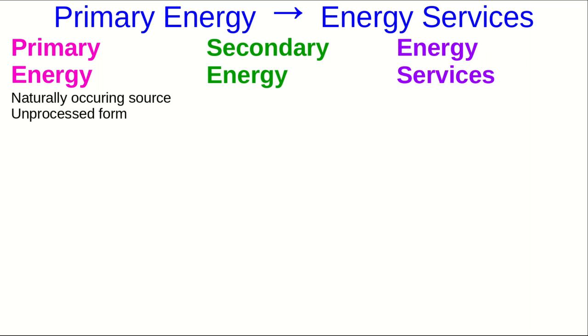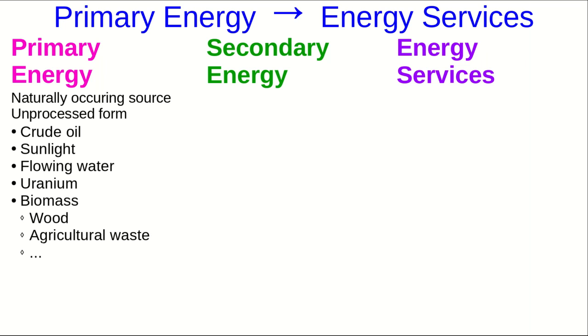Primary energy are the raw, naturally occurring things, usually but not always objects, which contain energy in unprocessed forms as we extract them from the environment. These are things like crude oil, sunlight, flowing water, uranium, biomass, which you might be less familiar with but it's things like wood and agricultural waste and many other examples, wind, coal, natural gas, and so on.